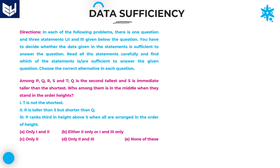The question being asked in this session is: among PQRST, total 5 members are there. Q is second tallest, and S is immediate taller than the shortest.